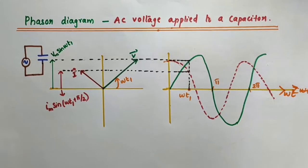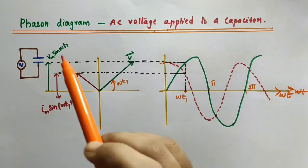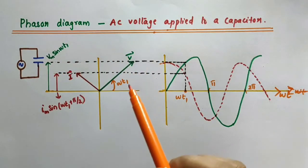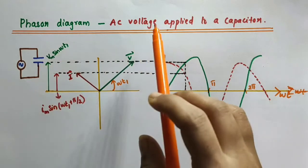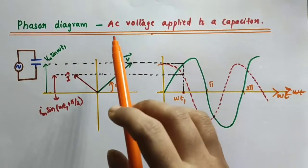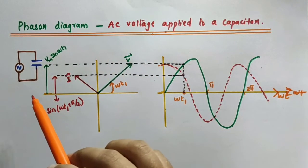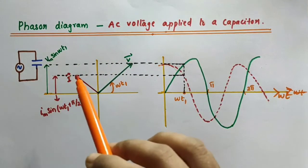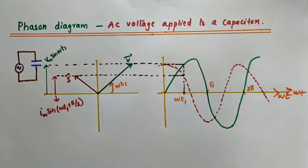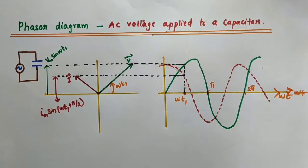Hello everyone. In this video we are going to talk about the phasor diagram for the purely capacitive circuit, that is AC voltage applied to a capacitor. We have discussed this case of AC voltage applied to a capacitor in the previous video, and this video is actually the phasor diagram for that. I will provide the link in the description box.